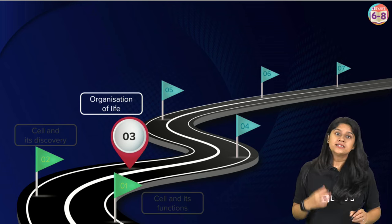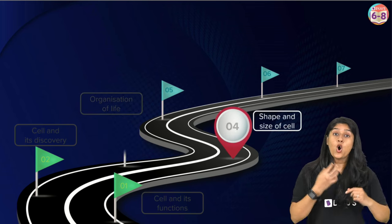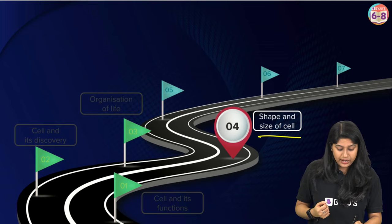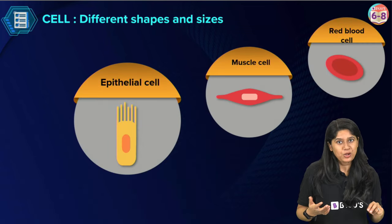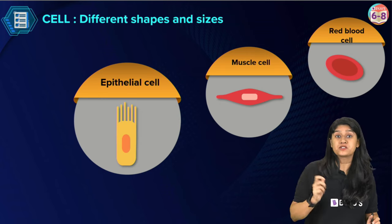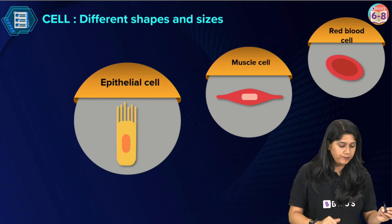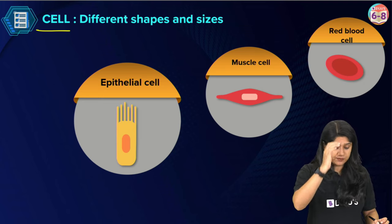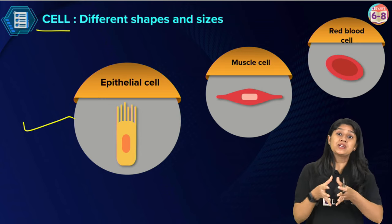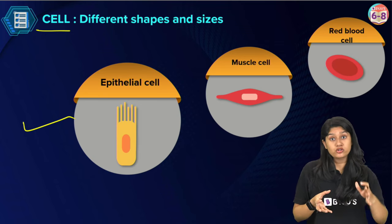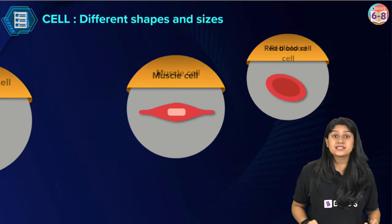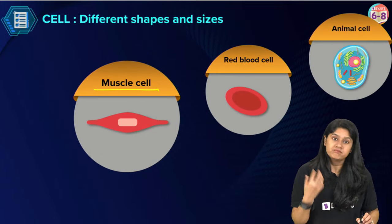Now we will discuss the different shapes and sizes of cells in different organisms. Not all the cells in our body are the same — each cell has a very specific function. For example, epithelial cells provide protection and act as a barrier. They are present on the skin and have a very different shape from other cells.